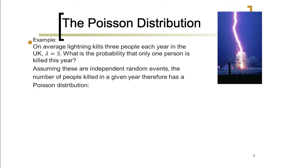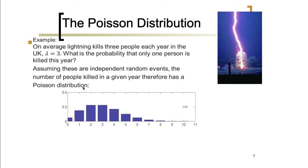Let's consider the following example. On average, lightning kills three people each year in the UK, so our lambda equals three. Lambda represents the mean number of occurrences in a given time interval — in this case, per year. We are asked: what is the probability that only one person is killed this year? Assuming independent random events, the number of people killed follows a Poisson distribution.